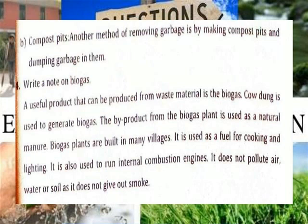A useful product that can be produced from waste material is biogas. Cow dung is used to generate biogas. The biogas plant residue is used as a natural manure. Biogas plants are built in many villages. It gives us fuel for cooking and lighting. They can also be used to run motor engines. It will not pollute the air, water or soil. However, it will give off some smoke.